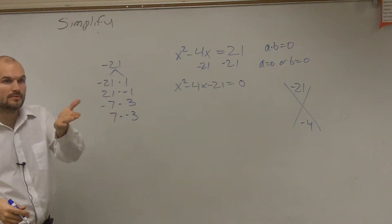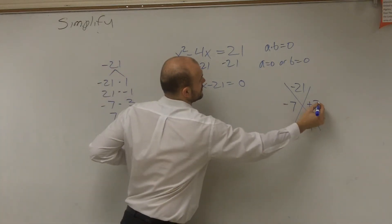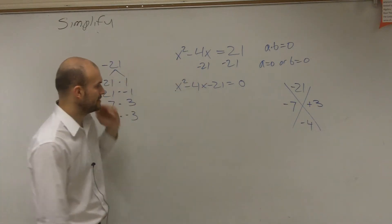So which one's that? Negative 7 and positive 3. Negative 7, positive 3. So then we plug them in.